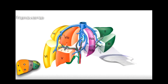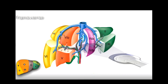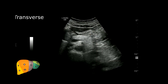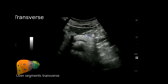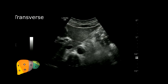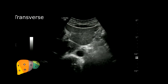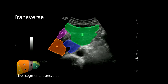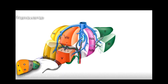Now approaching from inferior to superior, you can see the pancreas. Angling upwards, here we have segment 3, caudate lobe, segment 5, and 4b — so we're around this region right here.